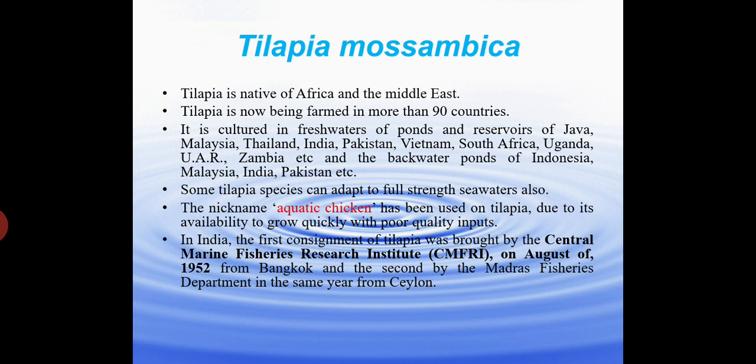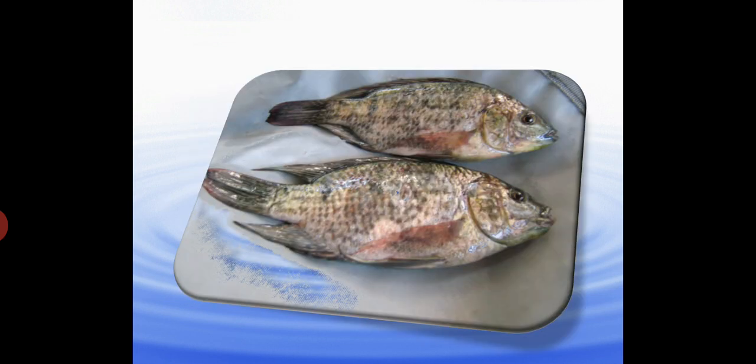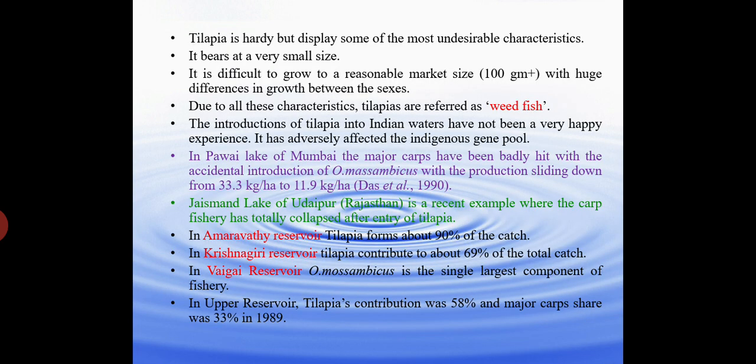Tilapia is cultured in Java, Malaysia, Thailand, India, Pakistan, South Africa, Uganda, Zambia, and in the backwaters of Indonesia, Malaysia, India, and Pakistan. Some Tilapia species can adapt to full-strength seawater. The nickname 'aquatic chicken' has been given to Tilapia due to its ability to grow quickly with poor quality inputs. In India, the first consignment was brought by CIFRI in August 1952 from Bangkok, and the second by the Madras Fisheries Department in the same year. Tilapia is hardy but displays some very undesirable characters.